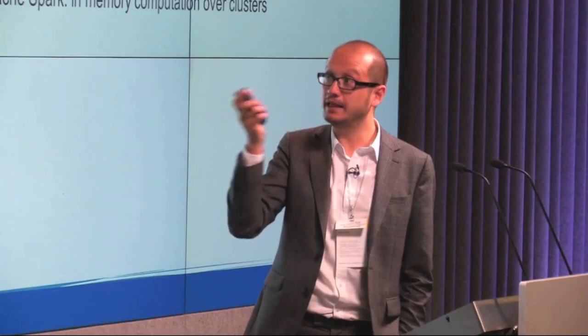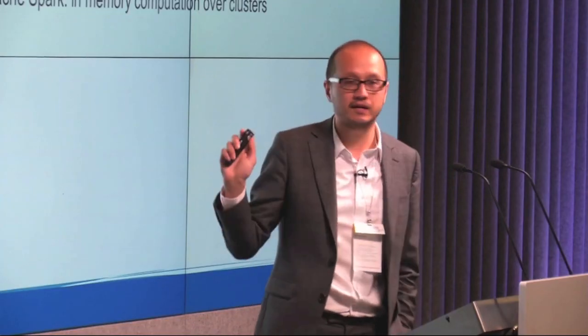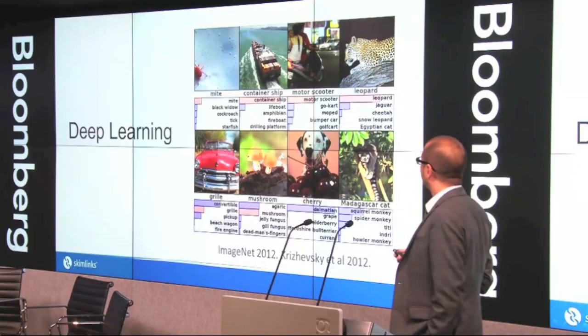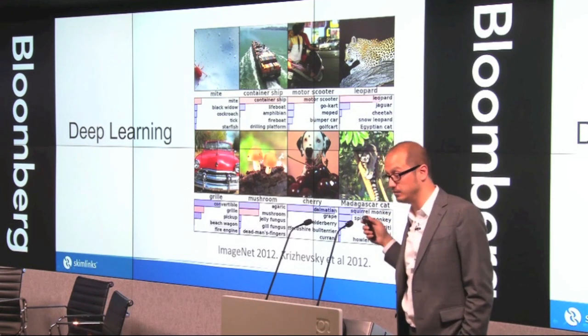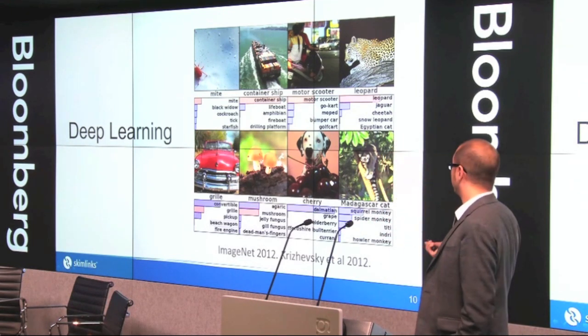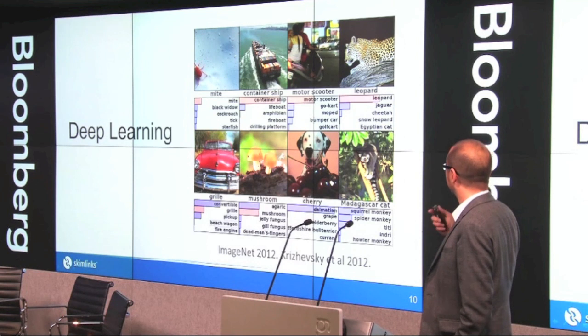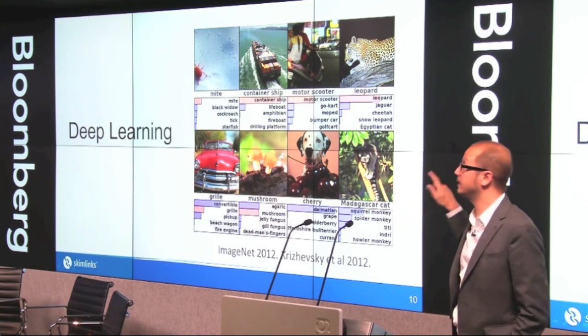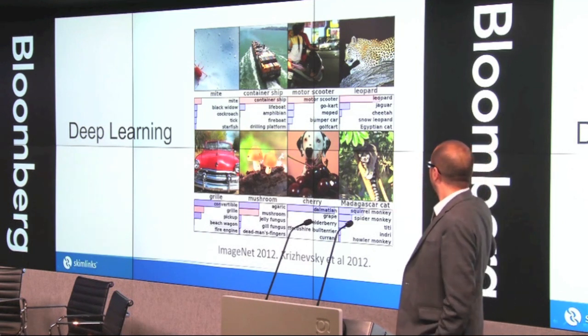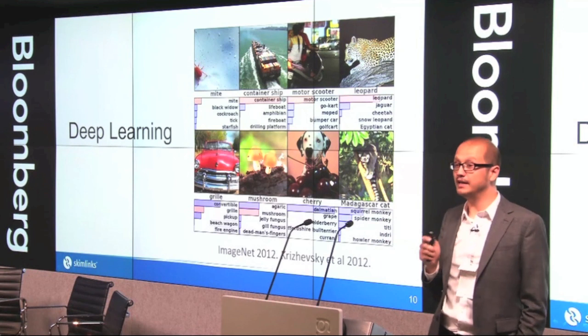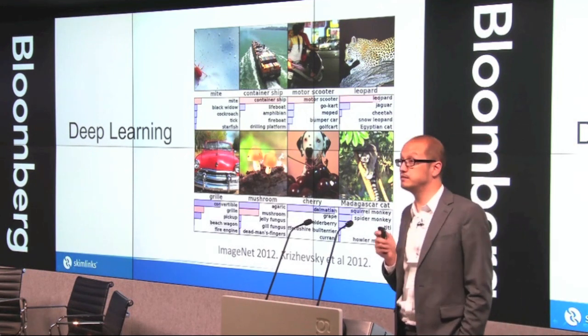I want to talk about a couple of things that I think are going to make developing this kind of system much easier. I'll talk mainly about deep learning. Deep learning really became famous in 2012 when Jeff Hinton's lab at the University of Toronto won the ImageNet image classification problem. This problem was to classify a million images into a thousand different classes. This team almost halved the previous error rate — it was a major step forward.